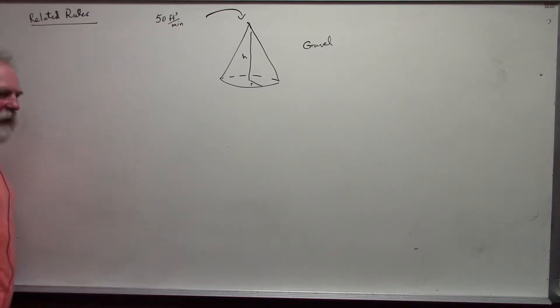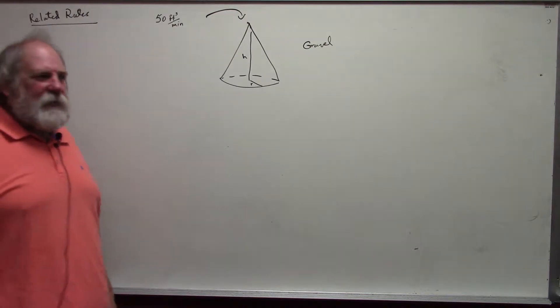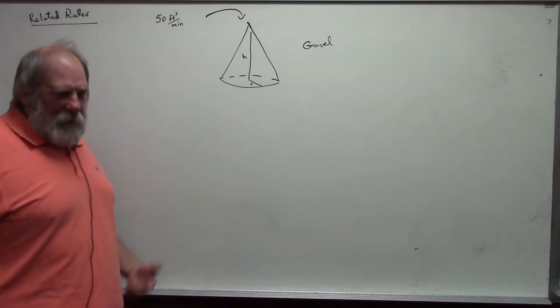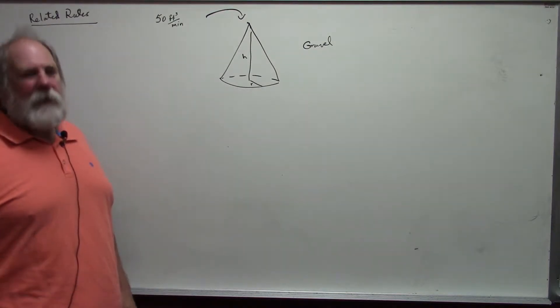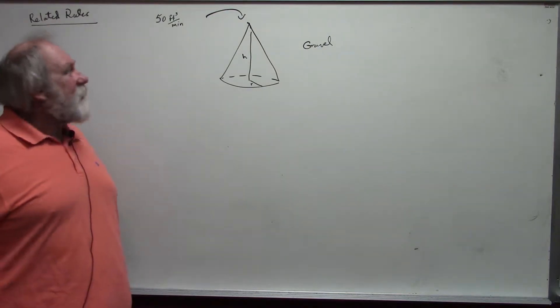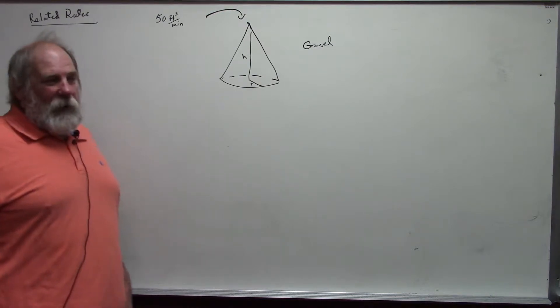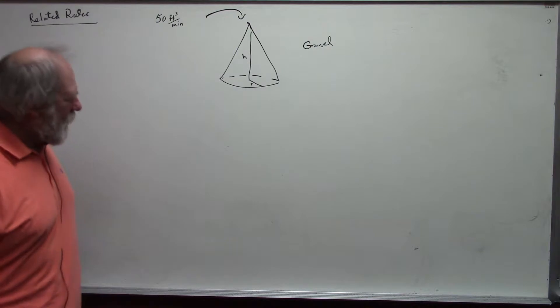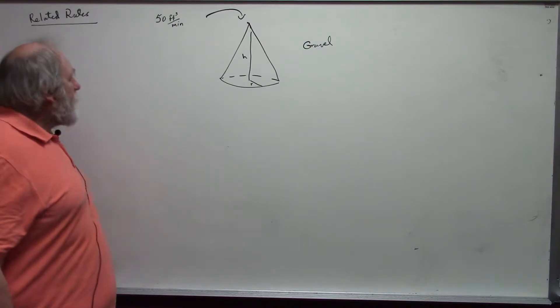In a related rate problem, we have two variables that are related by an equation. Hence, when we take their derivative with respect to some other variable, time in our case, we get an equation where we have two rates of change, derivatives, related in an equation. Hence, we have what we call those related rates.